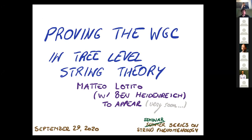For our next talk, we're very happy to have Matteo Lotito here to tell us about how to prove the weak gravity conjecture using tree-level string theory. All right. So let me start by thanking John and Cody for keeping this going well past the summer. This is work that will be appearing hopefully very soon with Ben Heidenreich. The goal is to give some general and more rigorous results on what we can say about the weak gravity conjecture in string theory, or at least in tree-level string theory, with some assumptions.